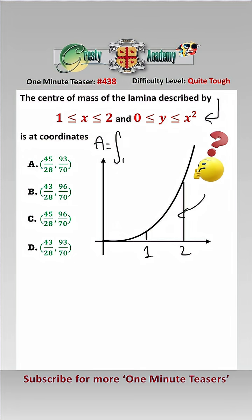So let's find out the area. That equals the integral between 1 and 2 of x squared dx which equals x cubed over 3 between 1 and 2 which is 7 over 3. So we've got our area.